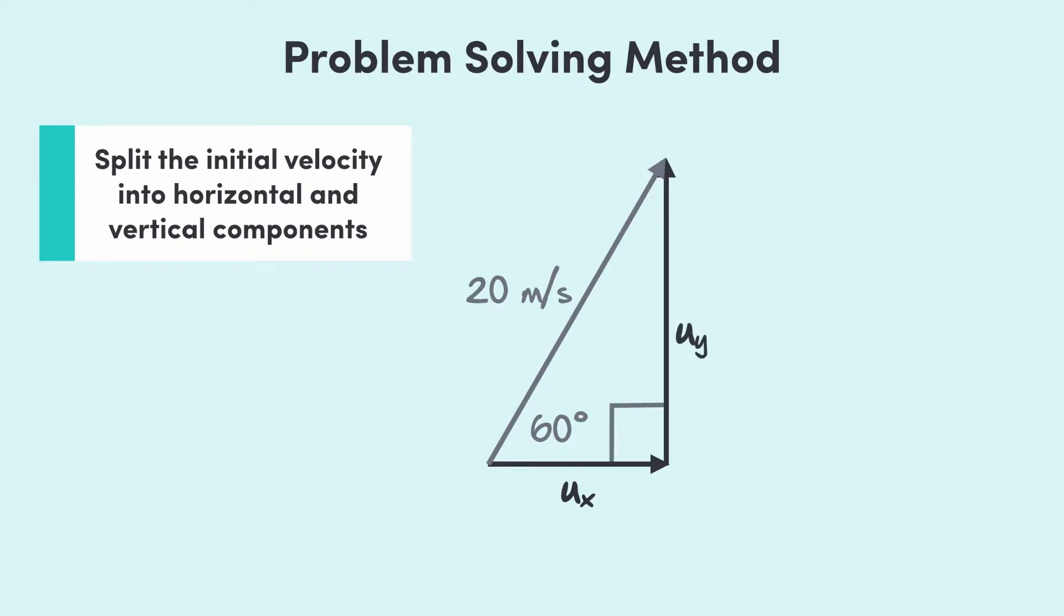Since they're perpendicular, we can use right angle trig, which tells us that the initial horizontal velocity, ux, is 10 meters per second and the initial vertical velocity, uy, is 10√3 meters per second.